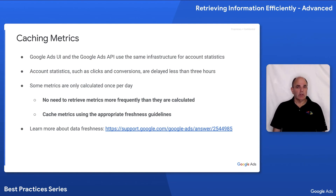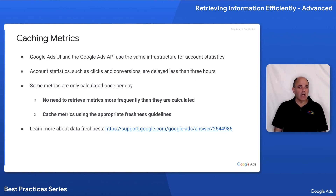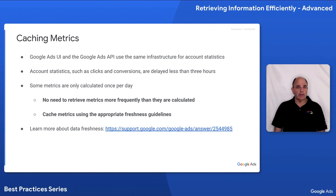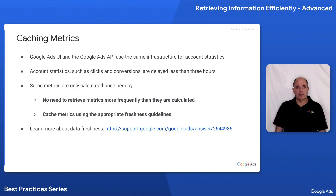One thing we see in the server logs is that some developers download metrics very frequently during the day, but may not be aware that certain metrics are only updated once a day, so there's no reason to download them more frequently. The metrics are calculated using the exact same mechanism as the user interface — it's the same infrastructure whether statistics are retrieved by the UI or the API. Whenever we've gotten a support case about a discrepancy, the most frequent reason is some implied segmentation that's different. We do publish a freshness guide at the URL posted in the slides.